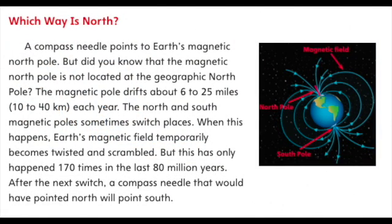Which way is north? A compass needle points to Earth's magnetic north pole. But the magnetic north pole is not located at the geographic north pole — the magnetic pole drifts about 6 to 25 miles, or 10 to 40 kilometers, each year. The north and south magnetic poles sometimes switch places. When this happens, Earth's magnetic field temporarily becomes twisted and scrambled. But this has only happened 170 times in the last 80 million years.